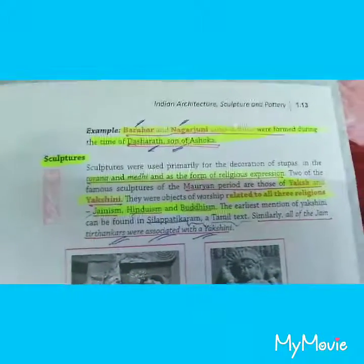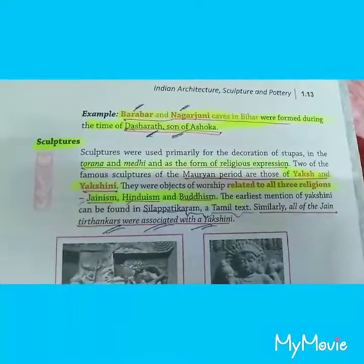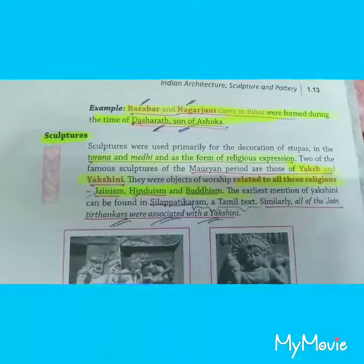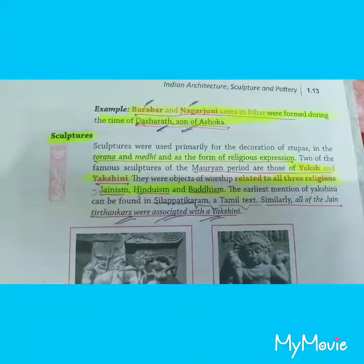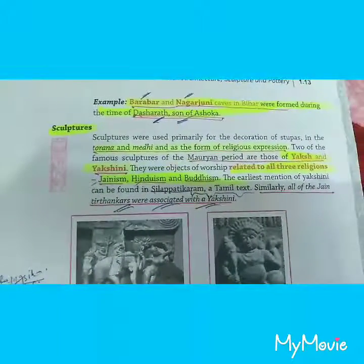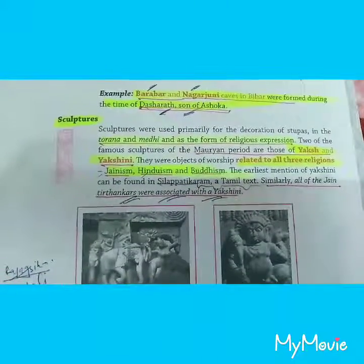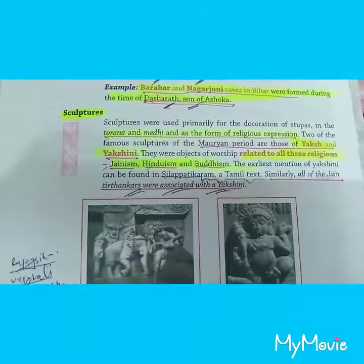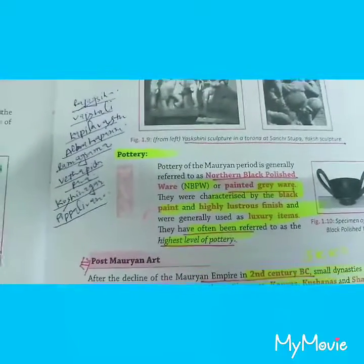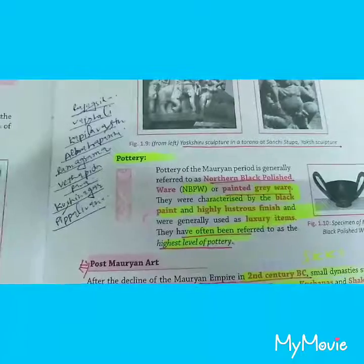Sculptures were primarily used for the decoration of stupas — in the Torana and Medhi — as a form of religious expression. Two of the famous sculptures of the Mauryan period are those of Yaksha and Yakshini. They were objects of worship related to all three religions: Jainism, Hinduism, and Buddhism.